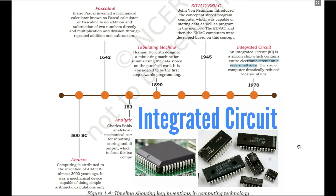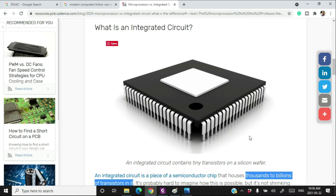The size of computers drastically reduced because of ICs. Millions of transistors can be fabricated on a single integrated circuit. That's why, because of the integrated circuit, our computer size was reduced drastically. Your modern day CPU is just an IC — one integrated circuit having billions of transistors fabricated on it.